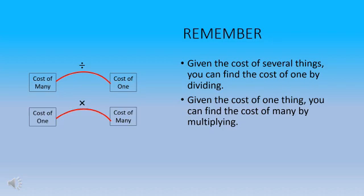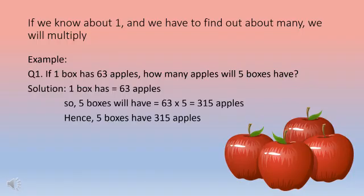Here we have to remember two main points. First: given the cost of several things, we can find the cost of one by dividing. Second: given the cost of one thing, we can find the cost of many by multiplying. If we know about one and we have to find out about many, we will multiply.